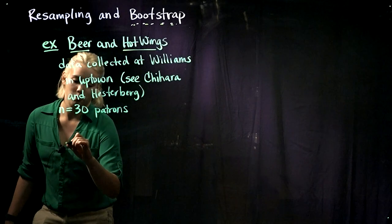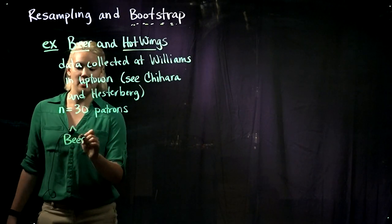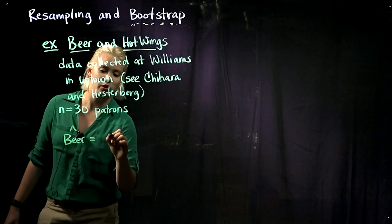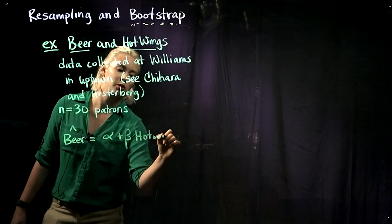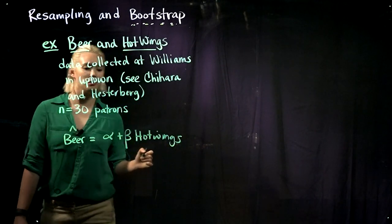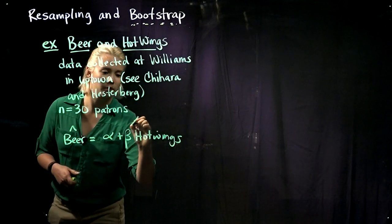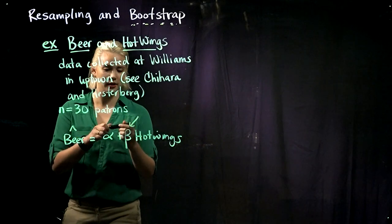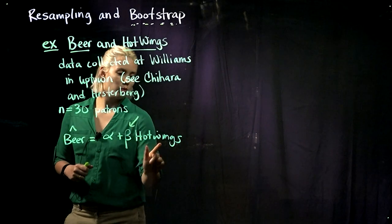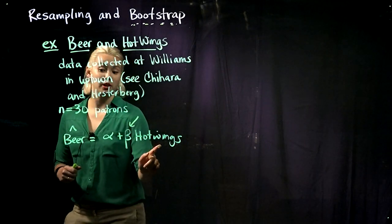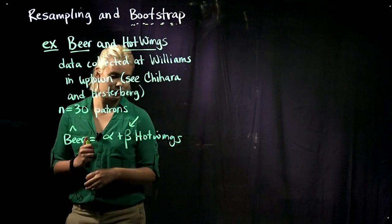If we have beer as a response, then the number of beers is going to be equal to alpha plus beta times the number of hot wings consumed. We are interested primarily in beta because that tells us: if a person eats one more hot wing, then we predict that they will consume beta more beers. So this is the parameter we're going to be interested in.